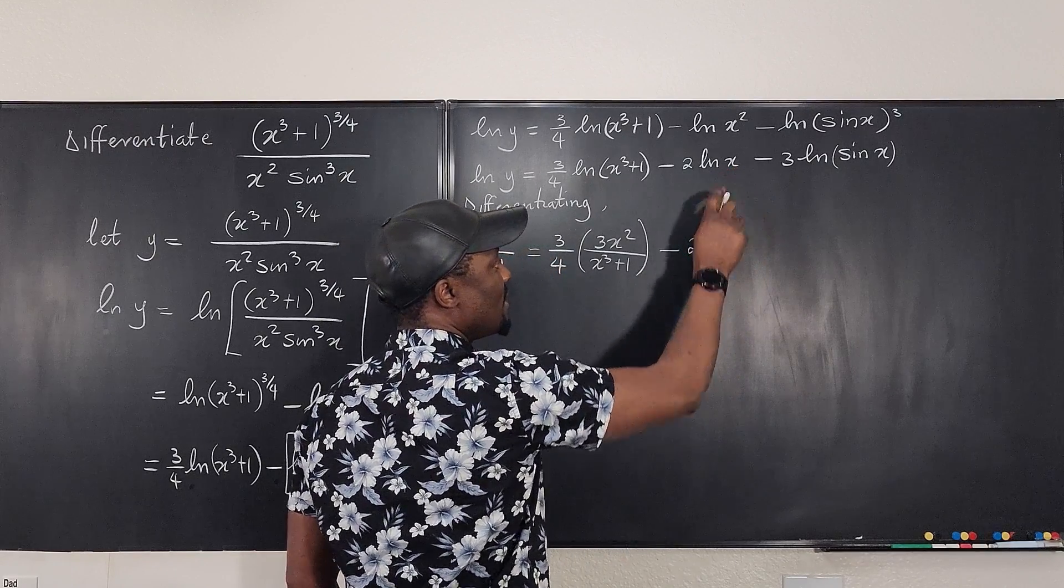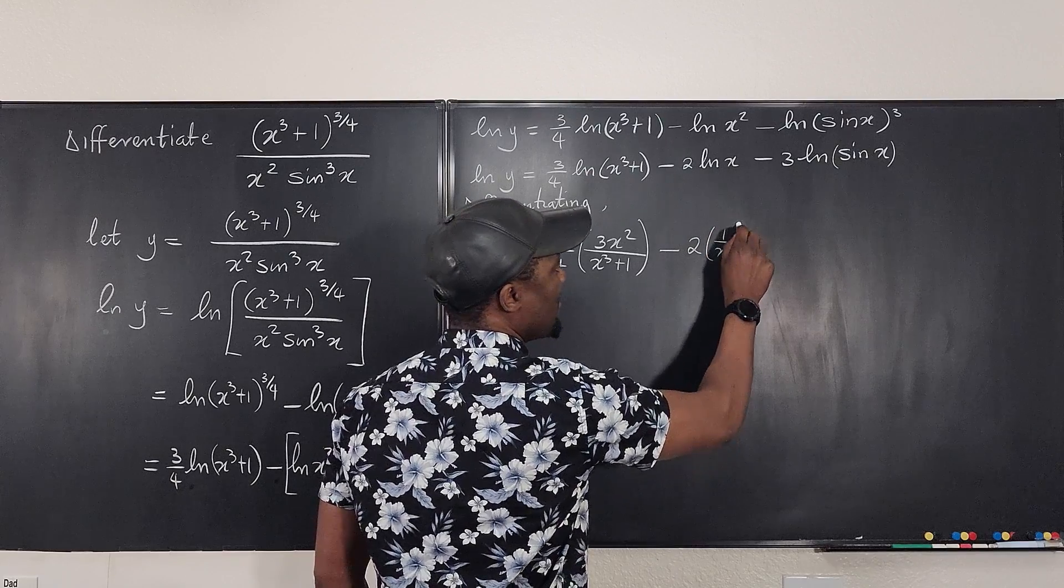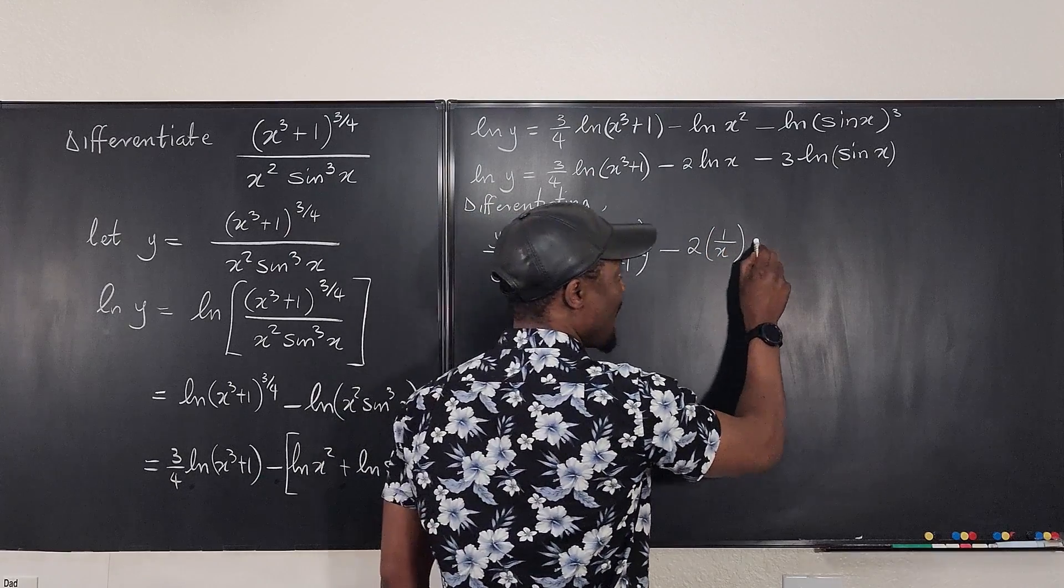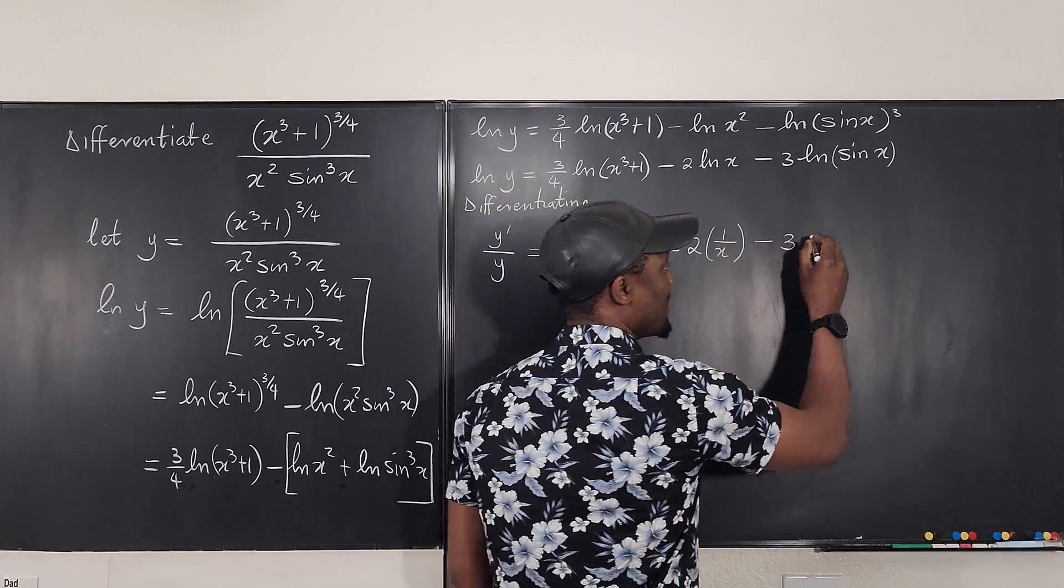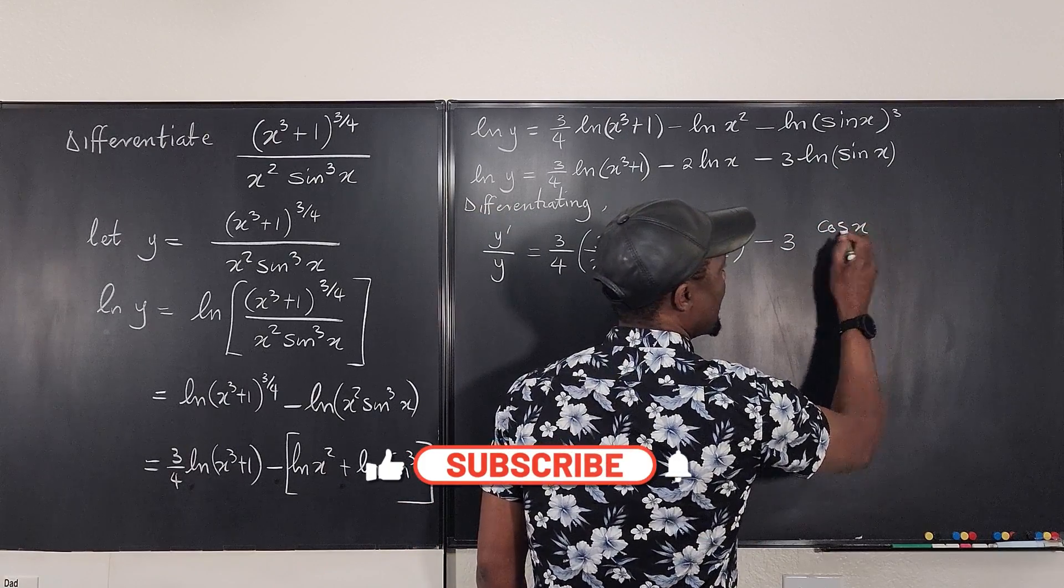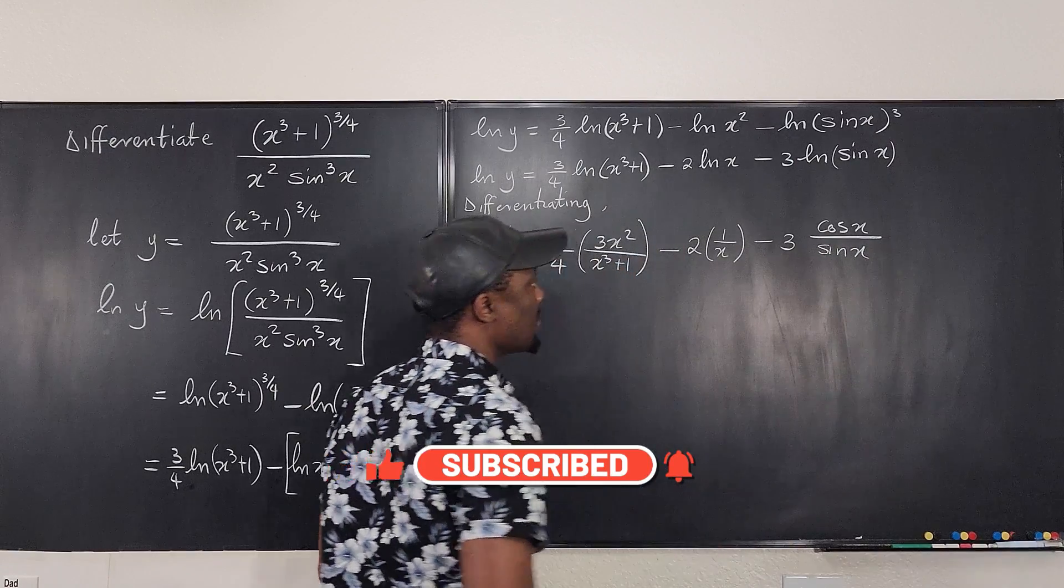Go to the next one. I'm going to write 2. The derivative of the argument is 1 divided by the argument, x. Go to the next one, 3. The derivative of the argument, cos x divided by the argument, sin x.